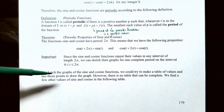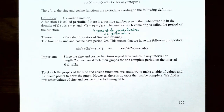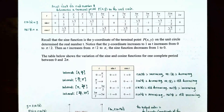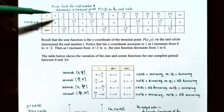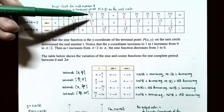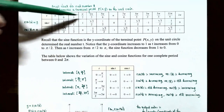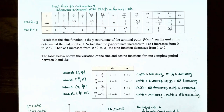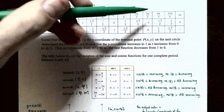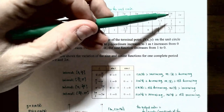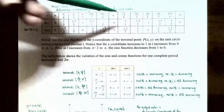To sketch the graphs, we could make a table of values. We'll use key values of t: 0, π/6, π/3, π/2, 2π/3, 5π/6, π — covering quadrants 1 and 2 — and then 7π/6, 4π/3, 3π/2, 5π/3, 11π/6, and 2π, covering quadrants 3 and 4.